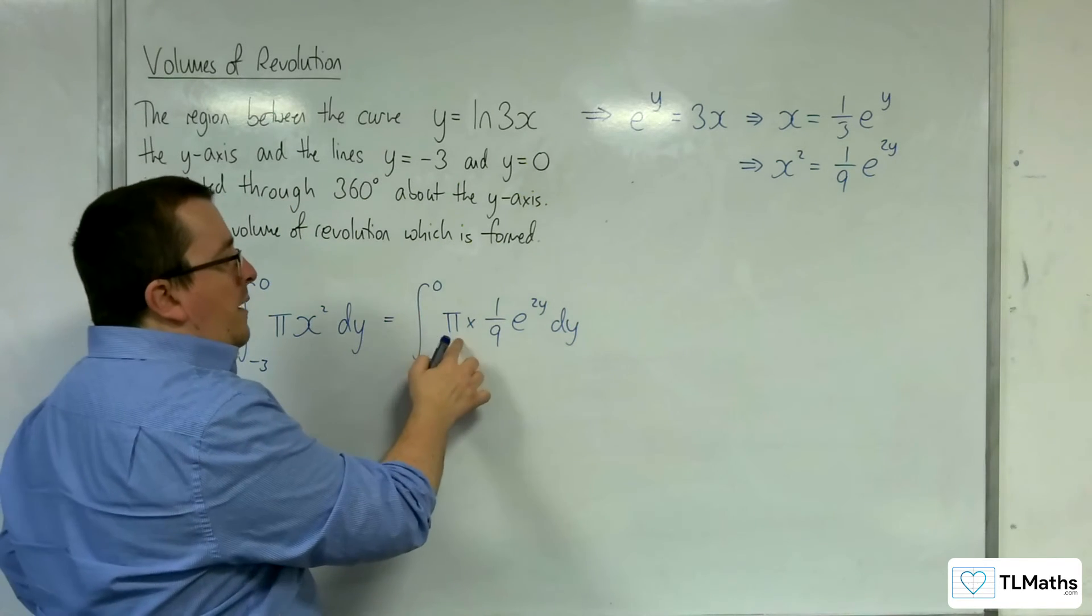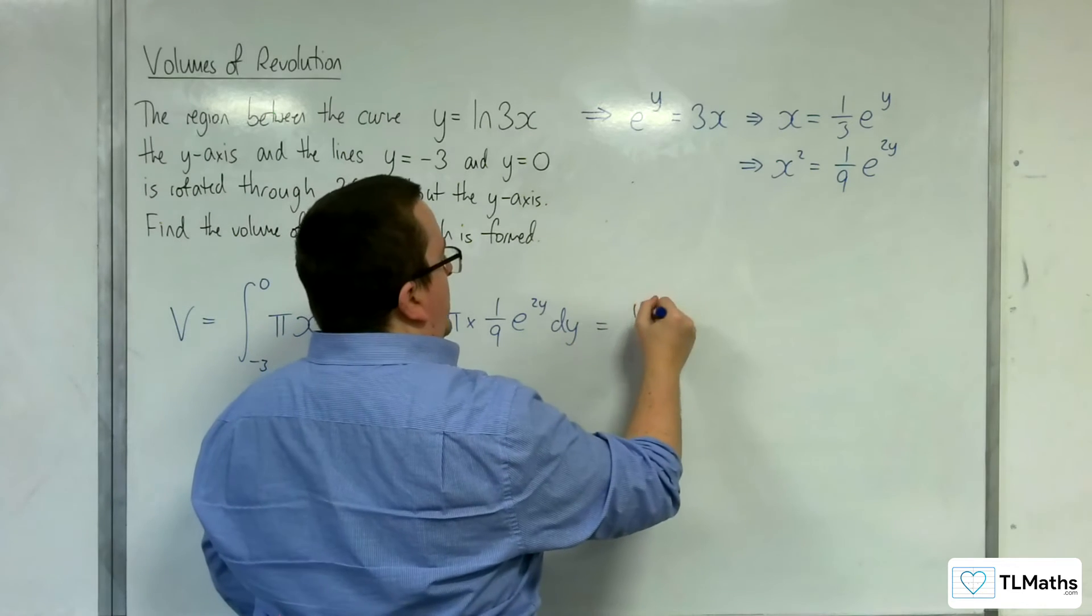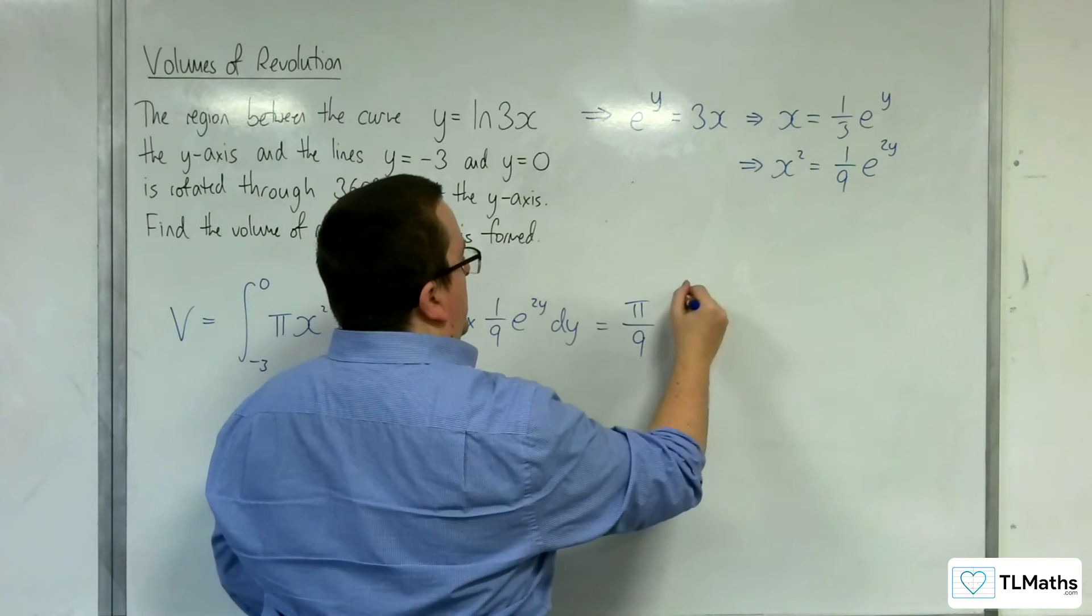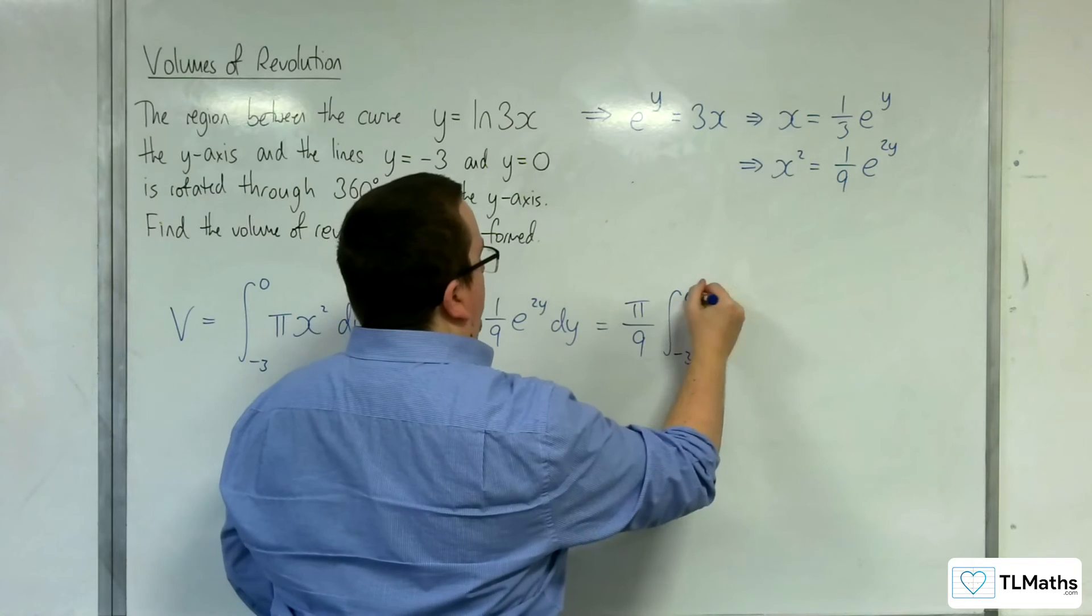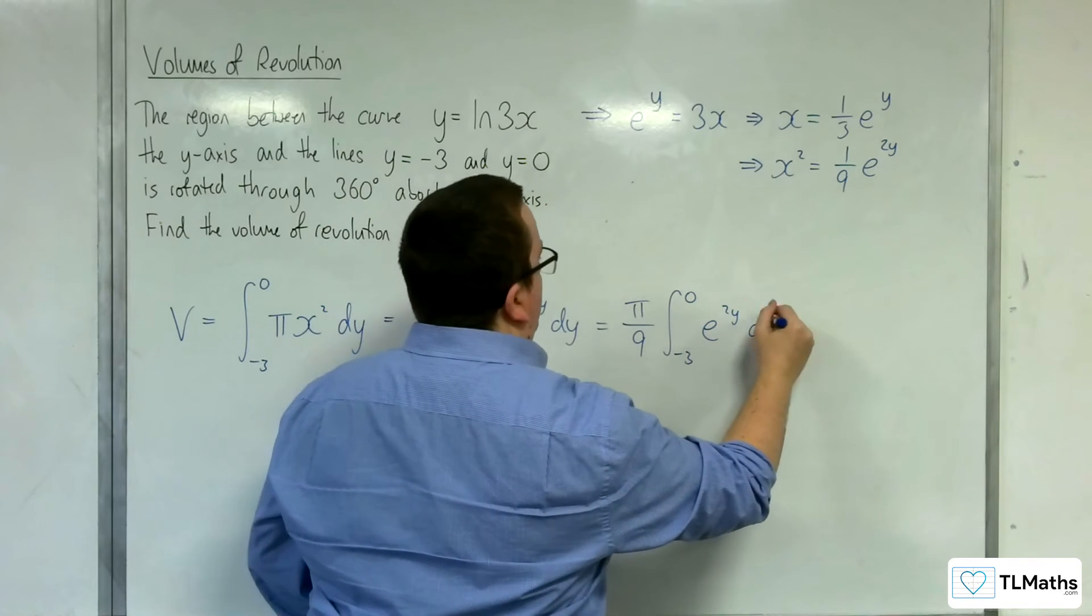So I can bring the pi and the 1 ninth outside of the integral, and I can have pi over 9 times the integral between minus 3 and 0 of e to the 2y dy.